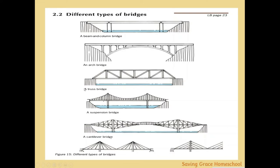The truss bridge uses the principle of triangulation to strengthen a bridge. Each member of the truss is built into triangle-like shapes, using the strength of the material under tension or compression to build the whole bridge. Truss bridges are not suitable for all sizes, types, and weights, but they can be built relatively easily, though they're not used for the largest of bridges.